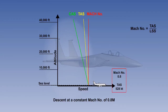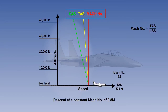CAS is used in the lower part of the descent. Note from the graph that although the constant in this example has been the Mach number, the relationship, and therefore the sequence, of CAS, TAS, and Mach number has remained the same as for a climb at a constant CAS. In the international standard atmosphere, the sequence will always be CAS, TAS, and Mach number. A useful way to recall the sequence is to remember the letters CTM, or the mnemonic chicken tikka masala.